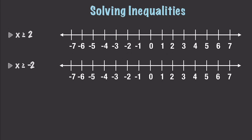Let's do a couple more. We have x is greater than or equal to 2. We find our 2 — it's greater than or equal to, so that means it's a filled in circle. We draw that in, fill it in, and draw an arrow towards where x is — so it goes in this direction. And one more: negative 2, greater than or equal to, so we fill in the circle. X is greater than or equal to negative 2, so we draw in our line and fill in our arrow.